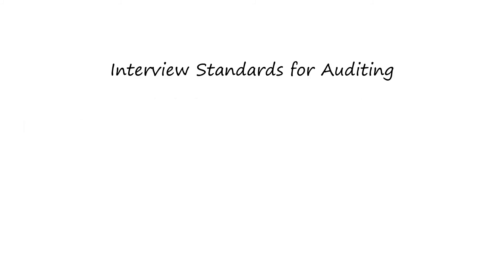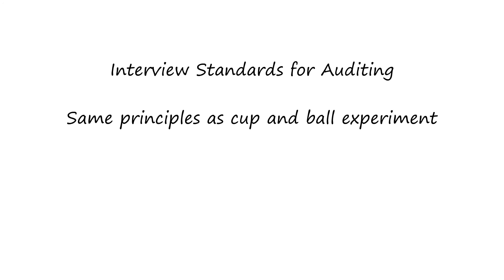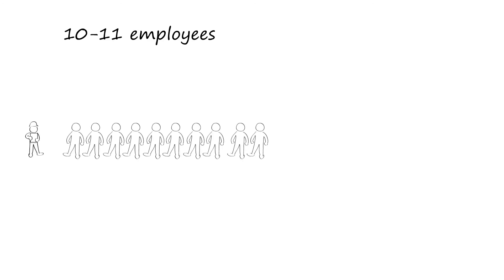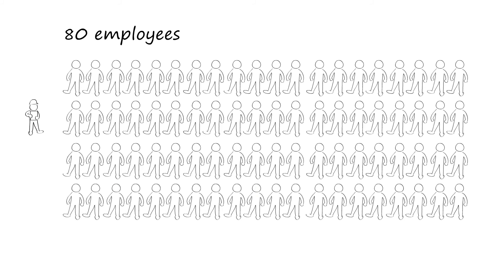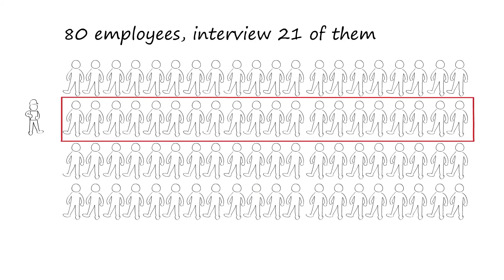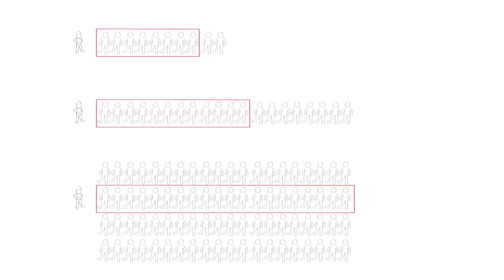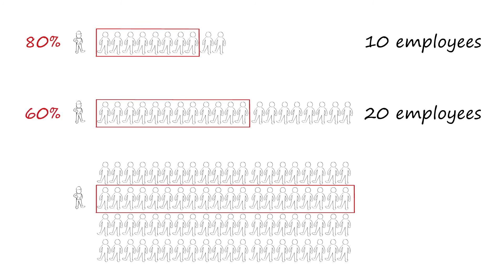As an auditor, you're likely familiar with the interview standards for auditing. If you take a look at these, you'll see they are designed on the same principles as the cup and ball experiment. For instance, if there are 10 or 11 employees, you need to interview 8 of them. If you have 20 employees, you need to interview 12 of them. And if you have 80 employees, you need to interview 21. As a percentage, that's 80% for 10, 60% for 20, and a little over a quarter — or 26% — for 80 employees.